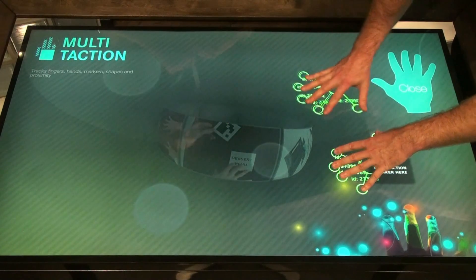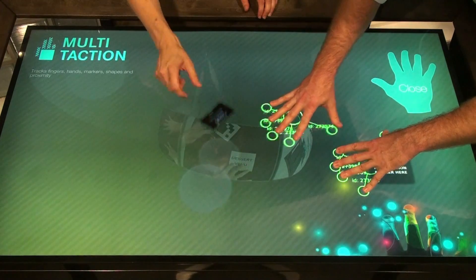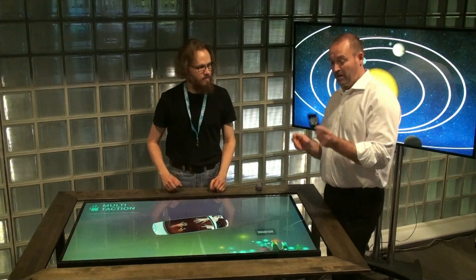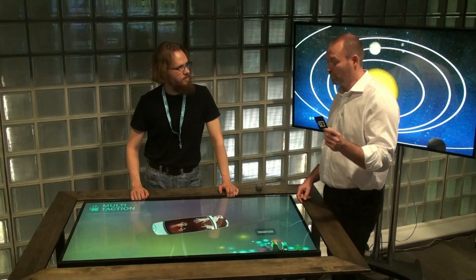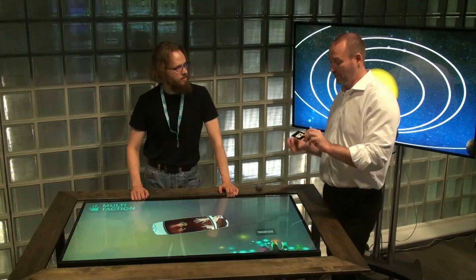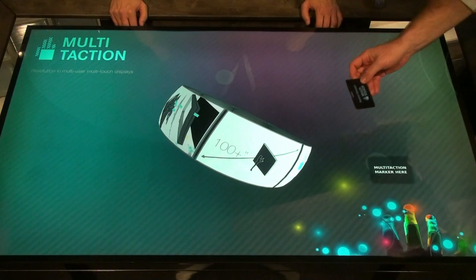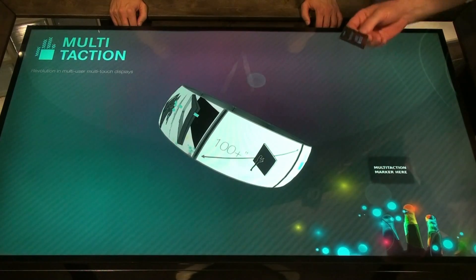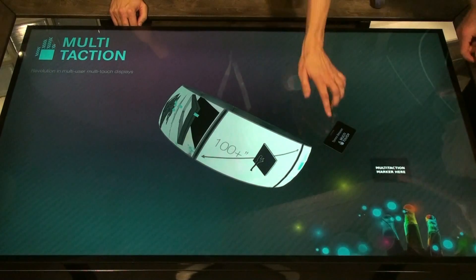And in addition to fingers, we can track markers. Here we have a 2D code. And basically, we can move that around. A tag like this can be attached to any object at the store. For example, when you go to a cosmetics or electronics store, you can have an object that has a 2D tag like this attached to that. And by placing that on the table, you get more information about that product itself.